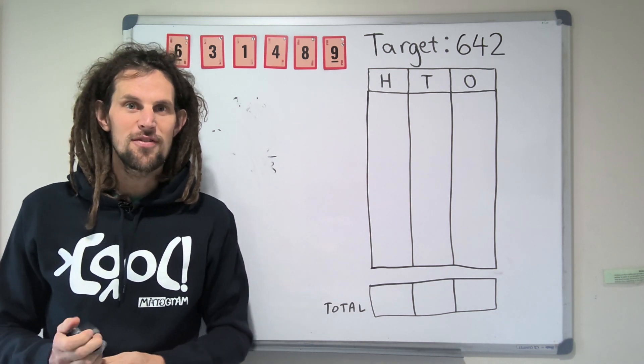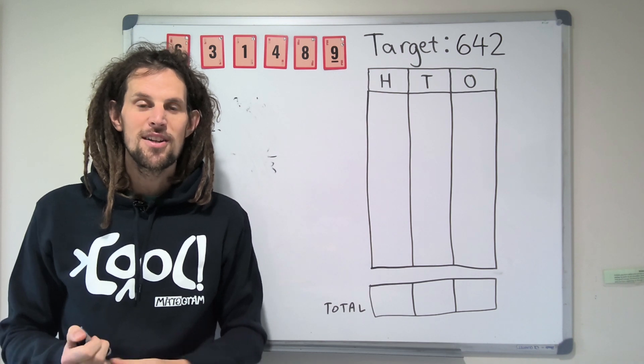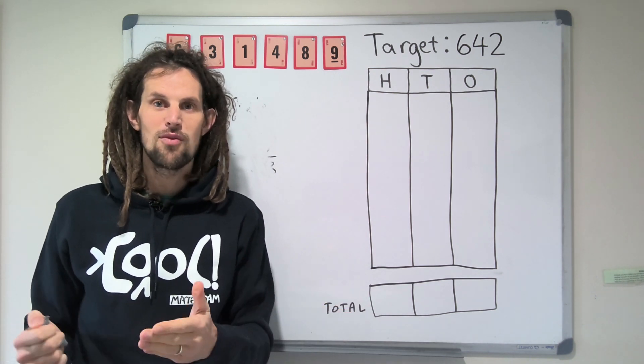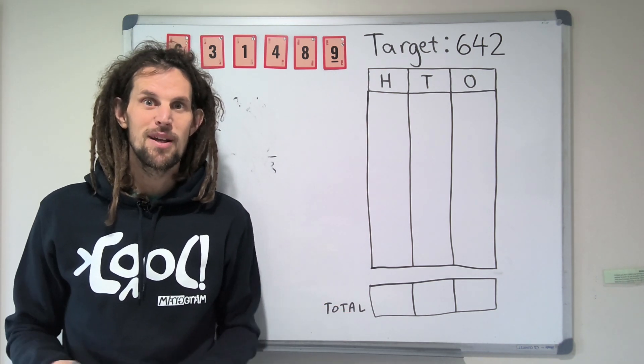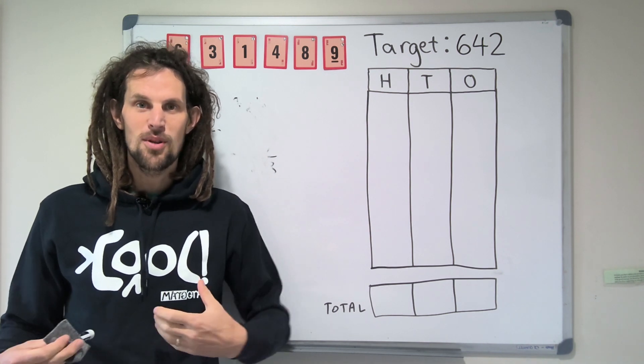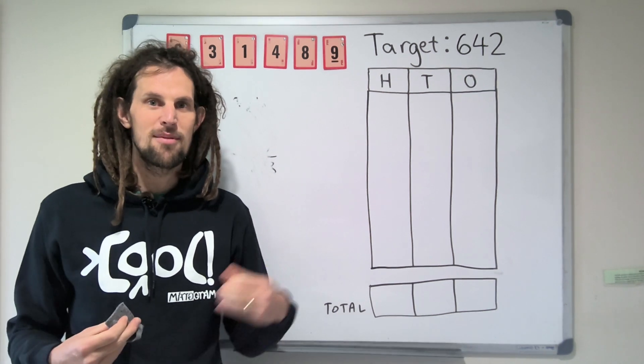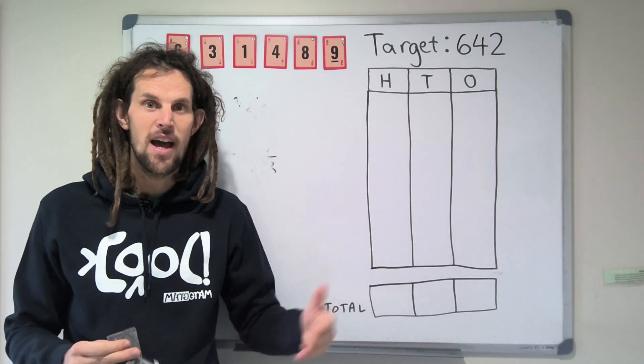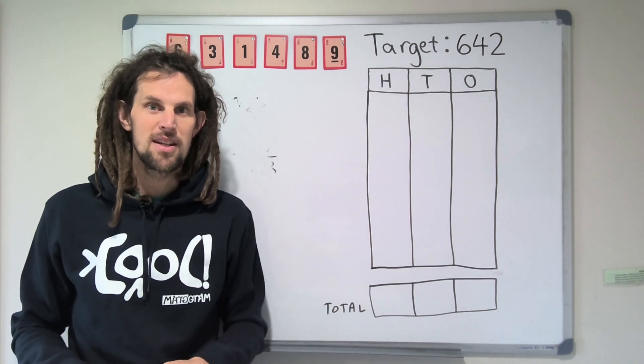But when she asks for a different representation, for example, you know, 37 tens and 5 ones, the kids just meet her with blank stares. And so what this demonstrates is that kids have been able to memorize a process and follow that, but they haven't truly understood place value.